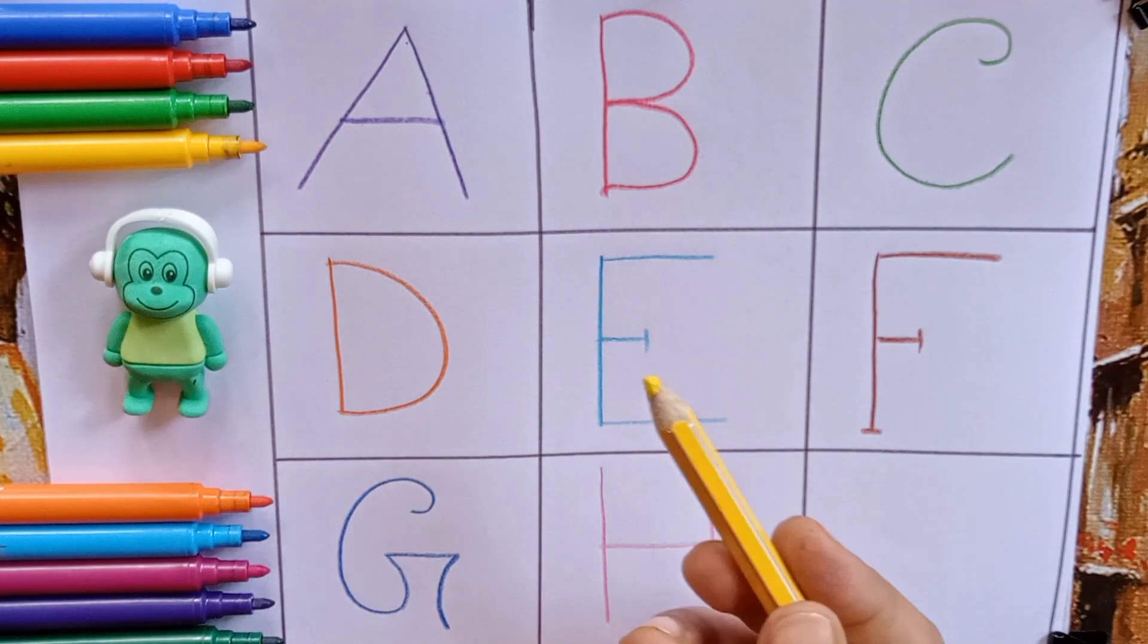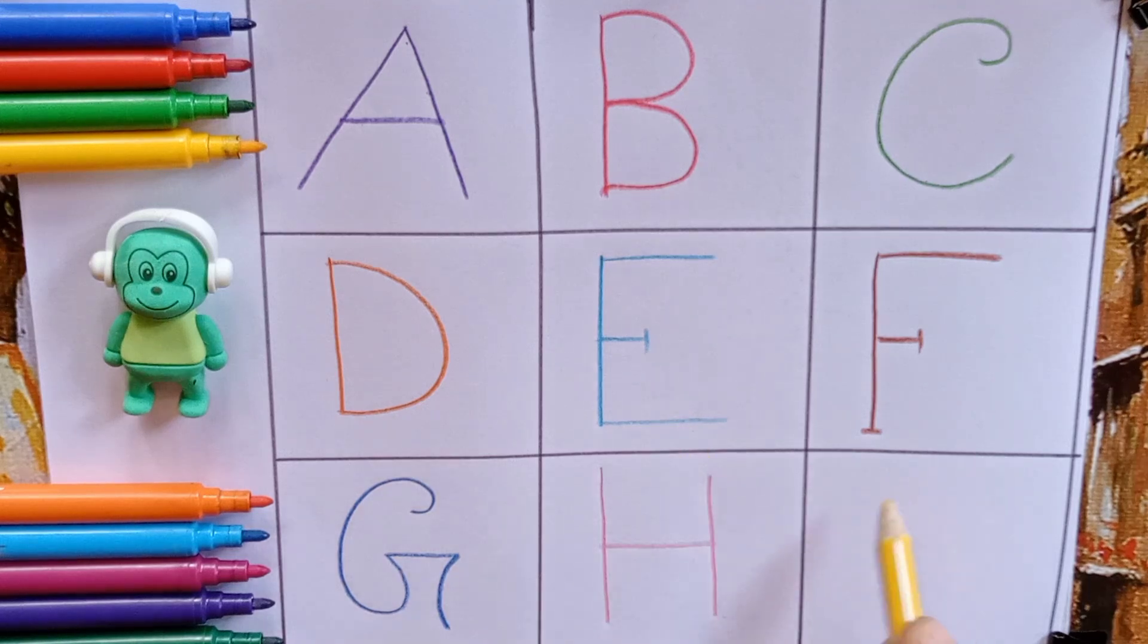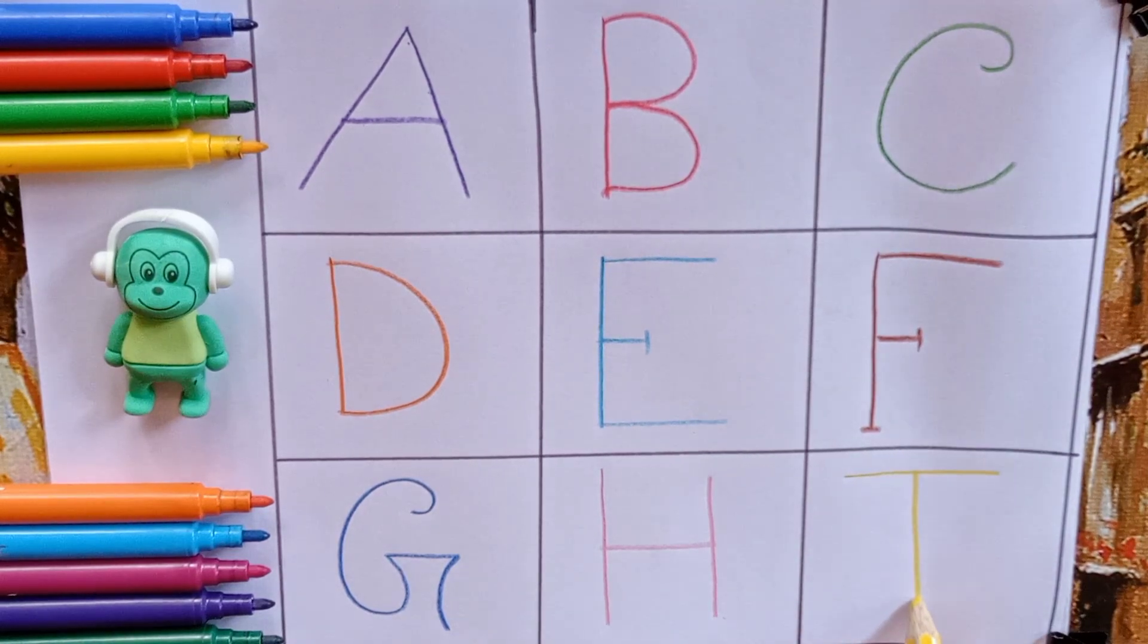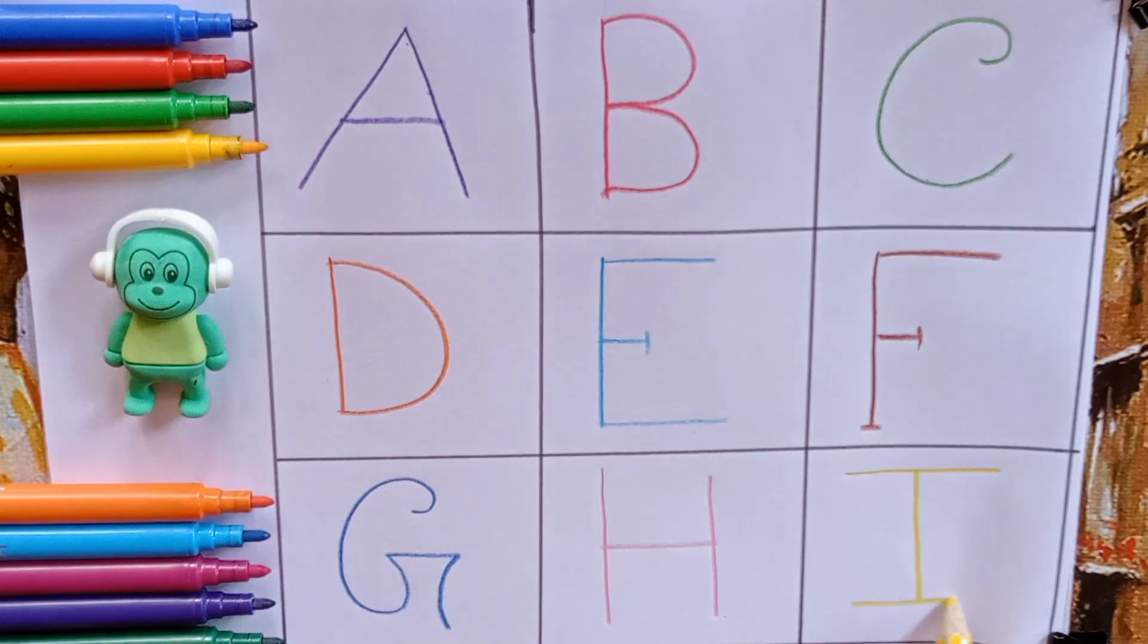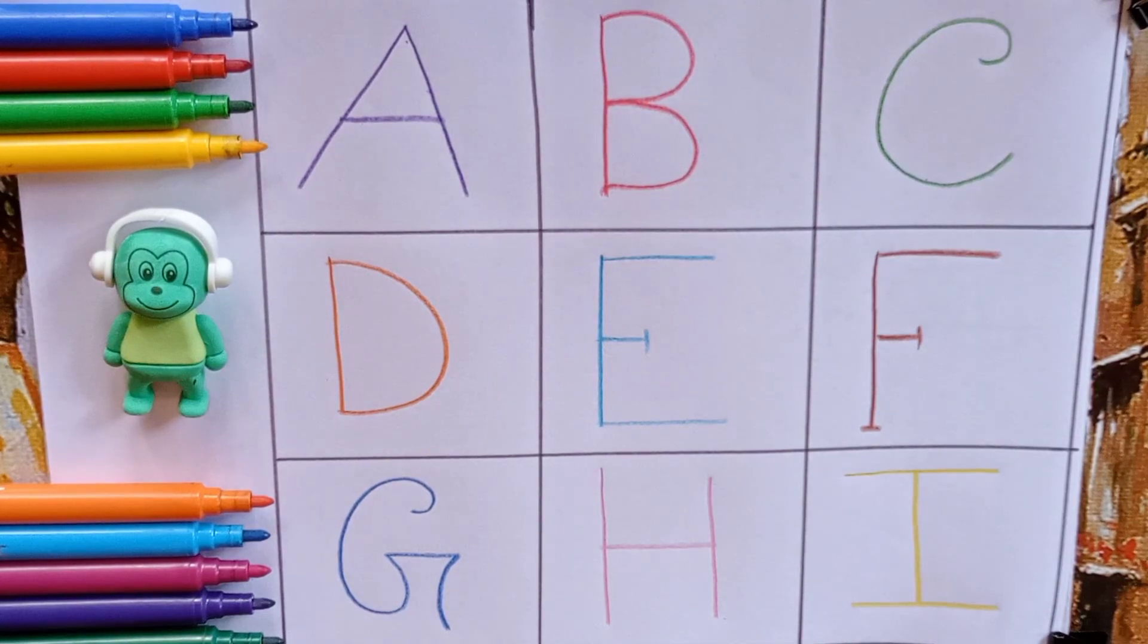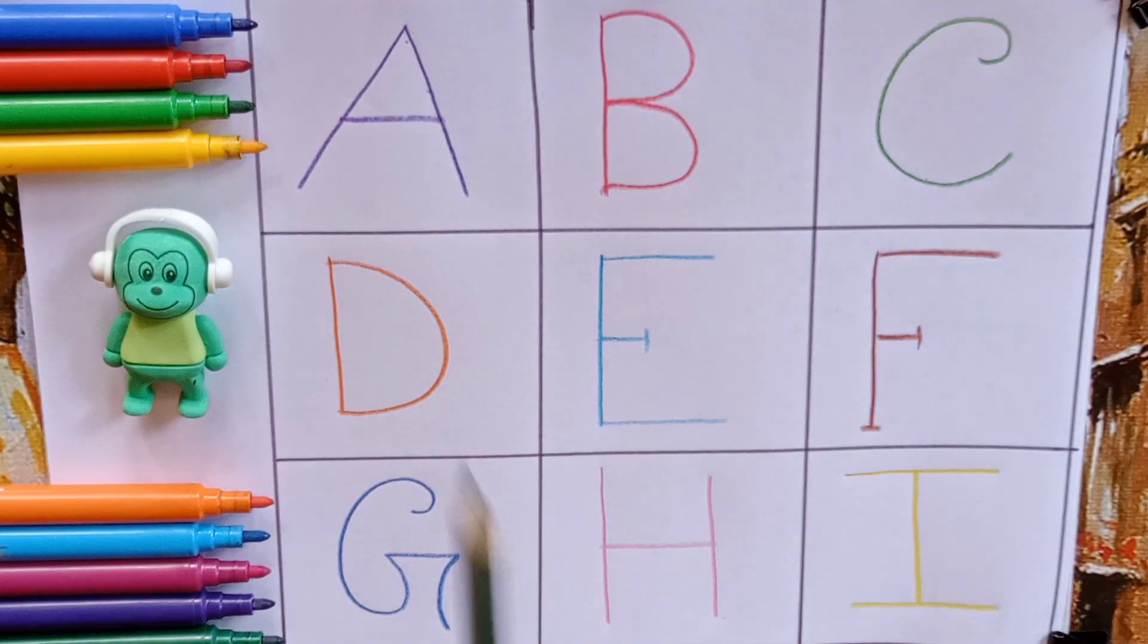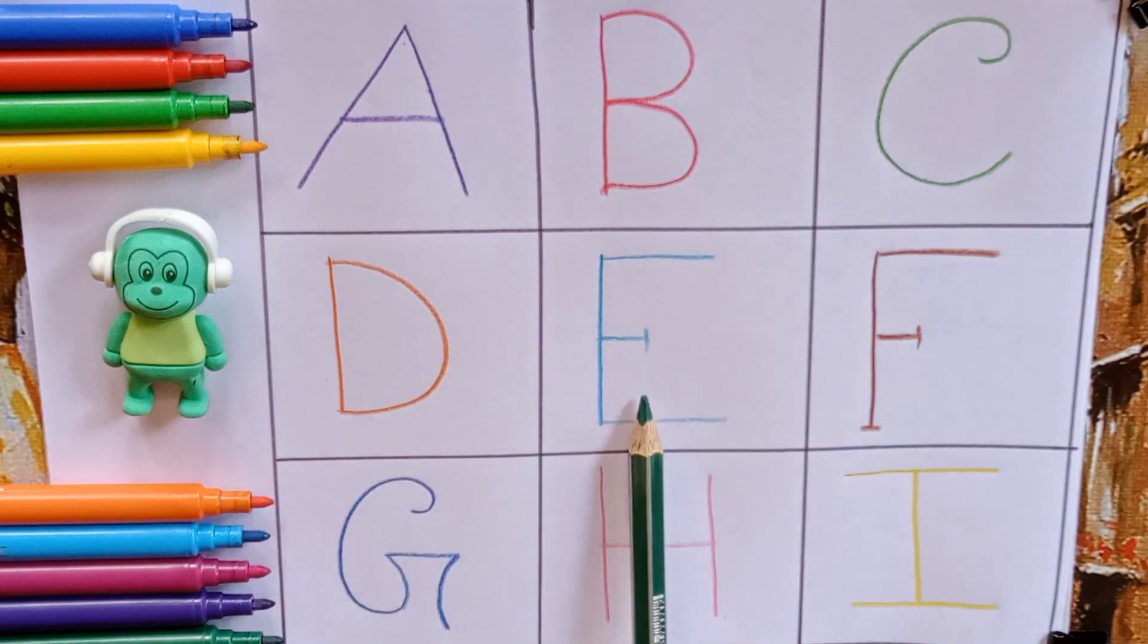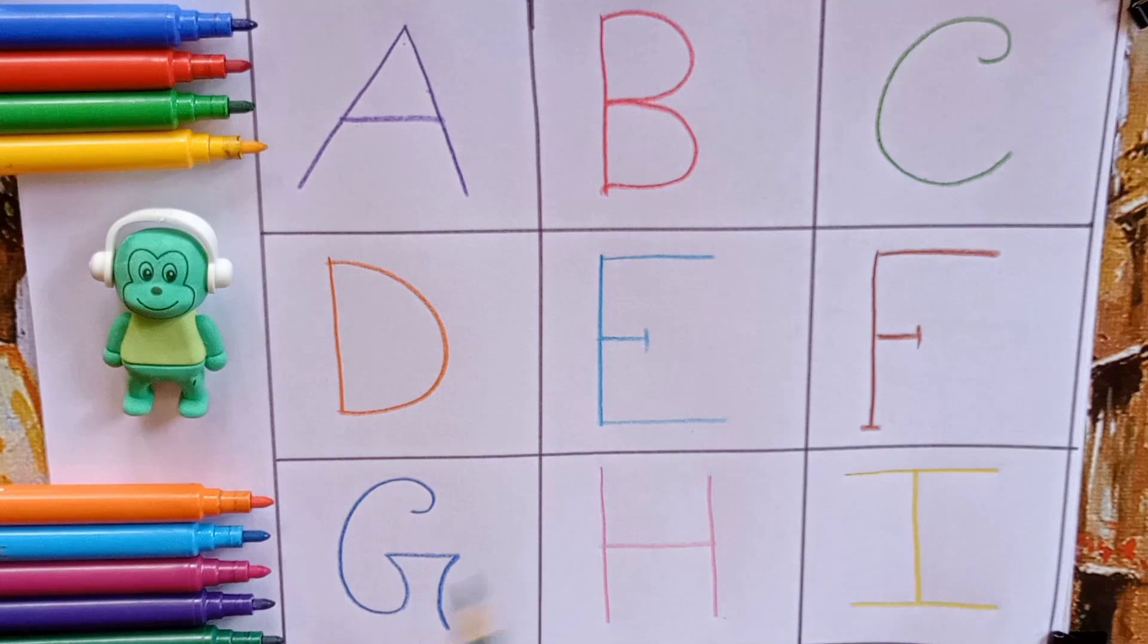Yellow. I. I for ice cream. Do you like to eat ice cream kids? Now say with me A B C D E F G H I. Bye bye kids, keep learning.